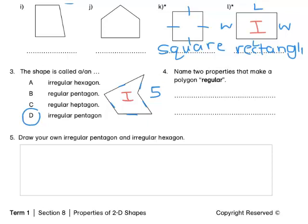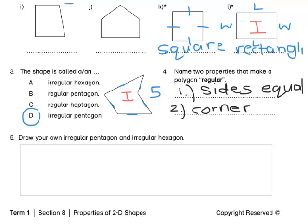For question four, name two properties that make a polygon regular. Number one: all the sides are the same length — or the sides have equal lengths. Number two: all of the corners, or you can say angles — that's the same meaning — all of the corners are the same size. So regular polygons have sides that are all equal, and all the corners are the same size. Press pause to complete three and four by yourself on your worksheet.